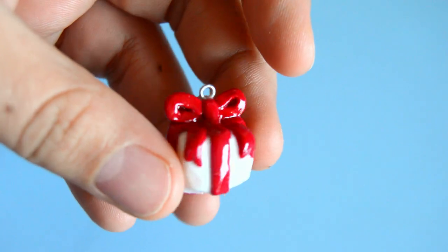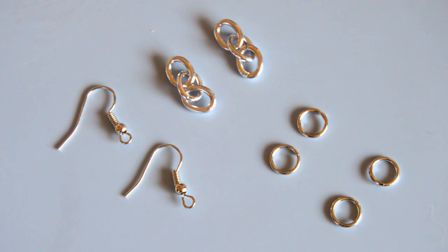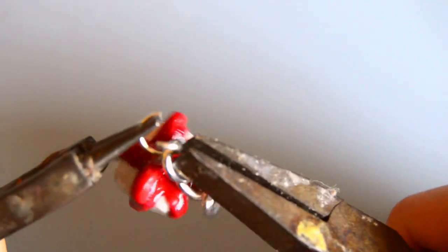Once the glaze completely dries, now I can finally turn them into earrings. On the screen is a picture of everything that you're going to need to create both pairs of earrings. The first thing you want to do is open your jump ring and add your present and chain, and then you just want to close your jump ring.